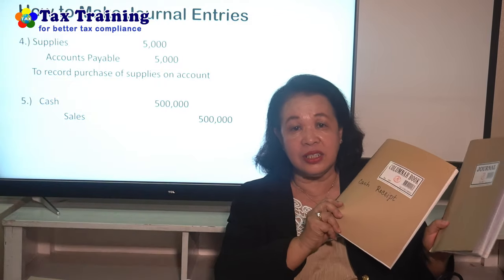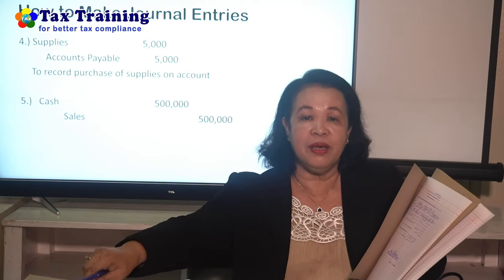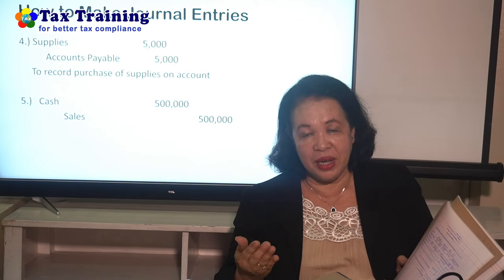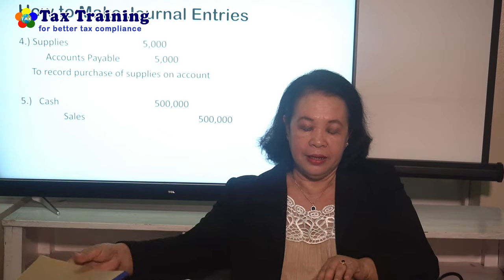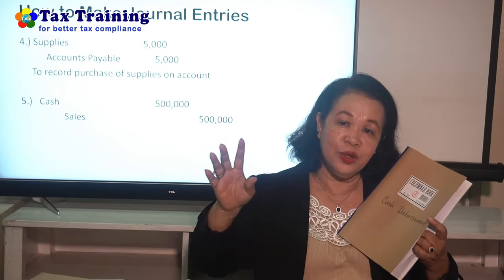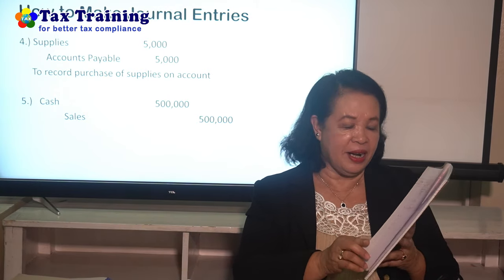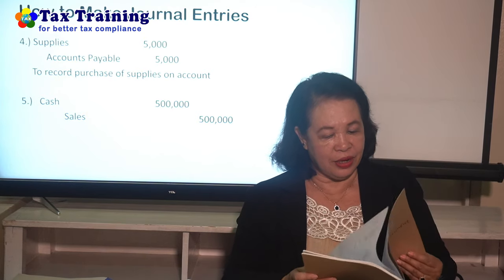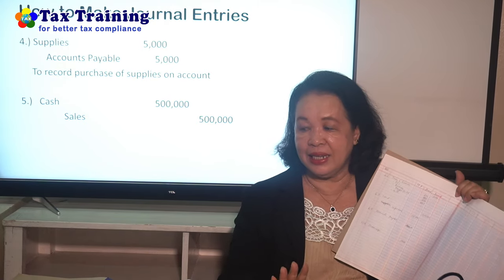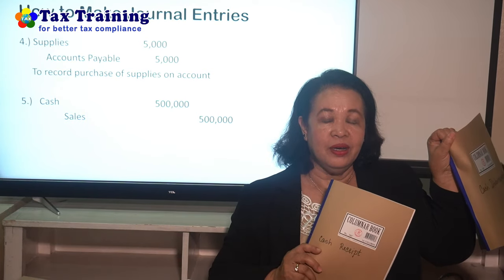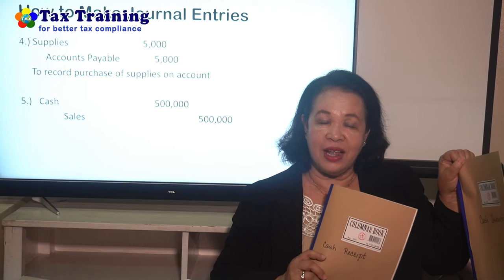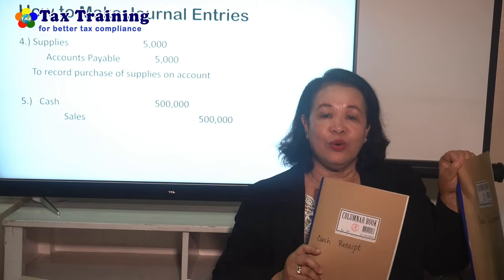We are done with the cash receipt and journal — now let's go to cash disbursement: how to record in the cash disbursement book, then the ledger, and then I'll give you a sample trial balance. The cash disbursement book records the cash we used — what we paid out. The most important thing to remember with cash disbursement: you cannot record here without a receipt. If recorded without a receipt, it is unsupported and will be disallowed — it will not be considered.